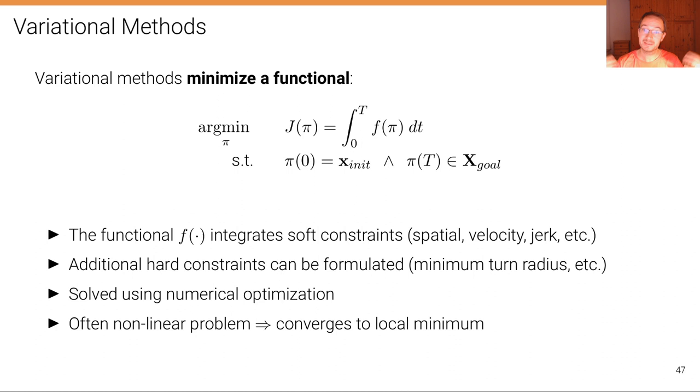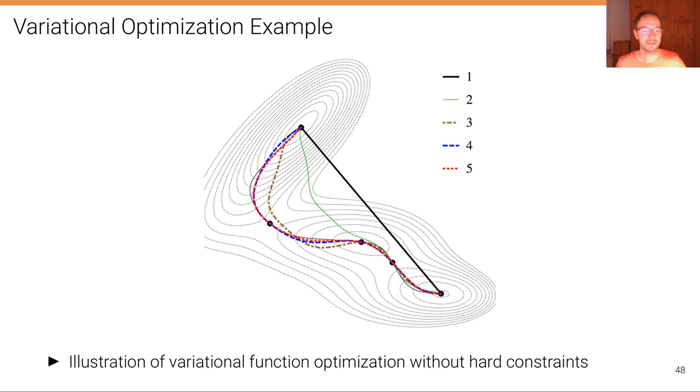Here's an illustration of a simple variational function optimization problem without any additional constraints. You can see the function here that's optimized, these are the different iterations. In the background you can see the soft constraints that are integrated through this functional f, such as constraints on the spatial location. You can see that now over time this function here moves towards the minimum of this valley here in order to move from the starting location to the goal location. The final iteration is the red one here.